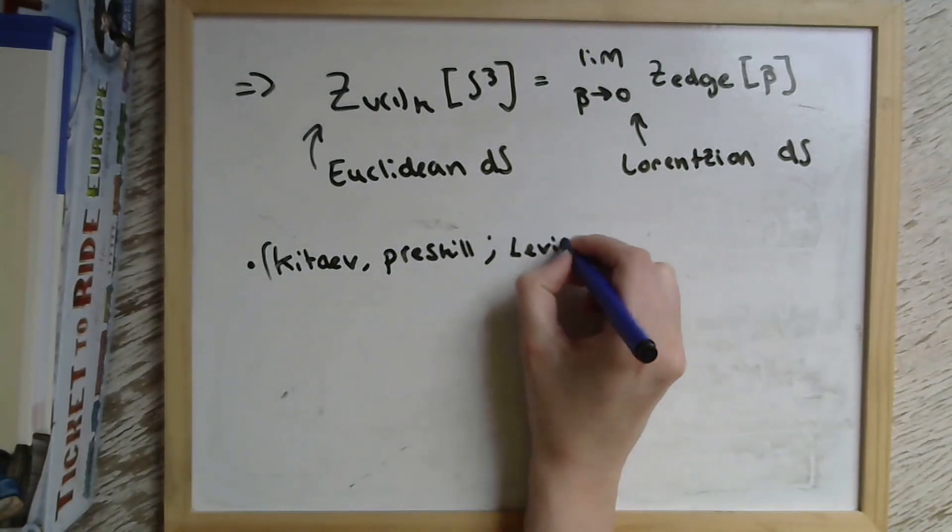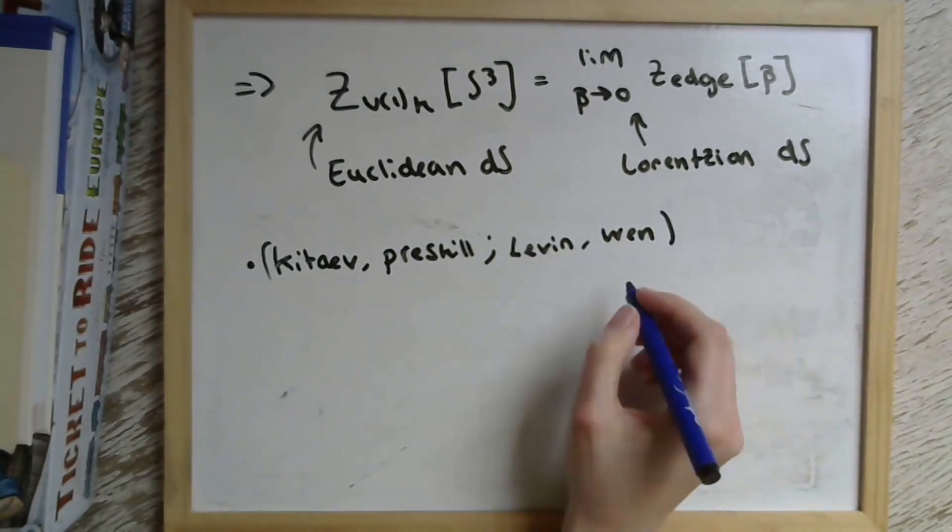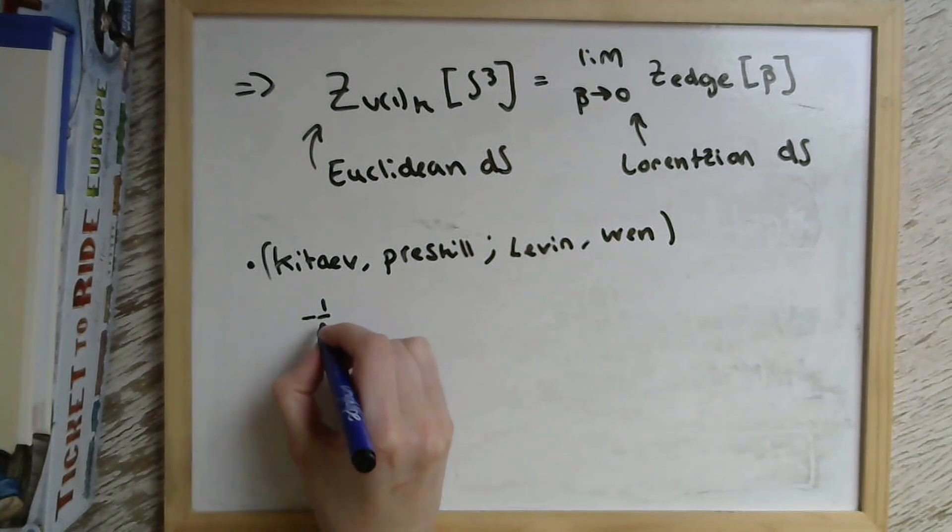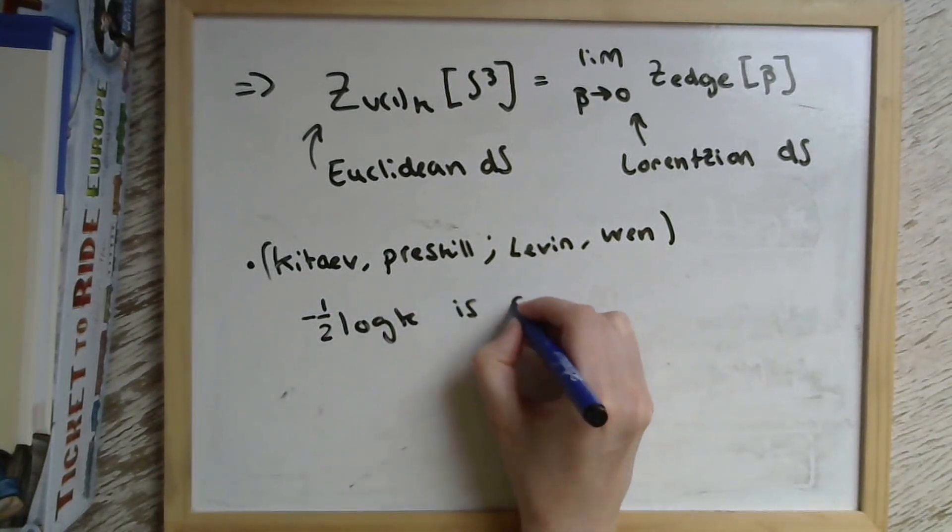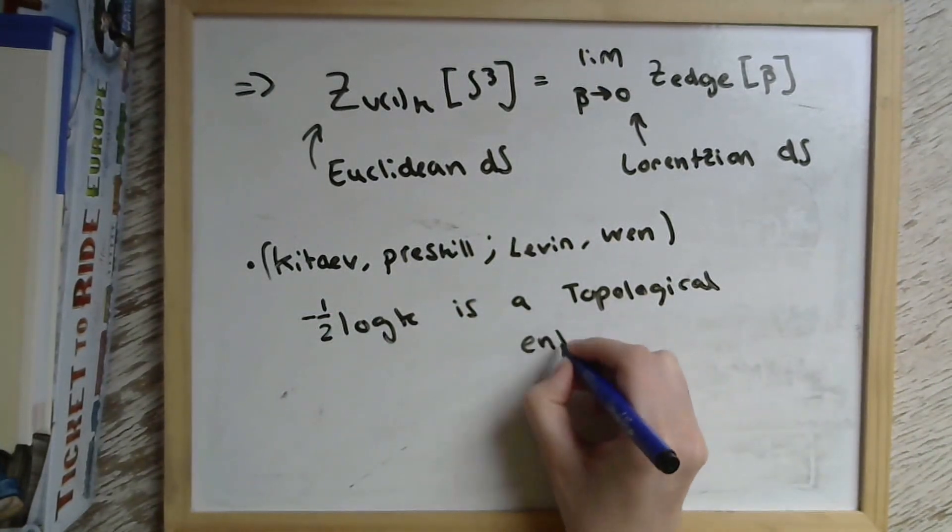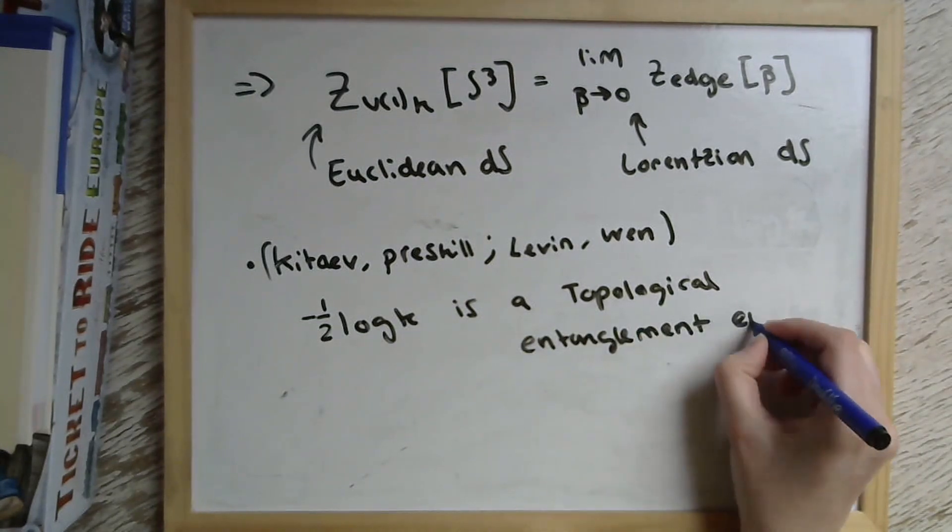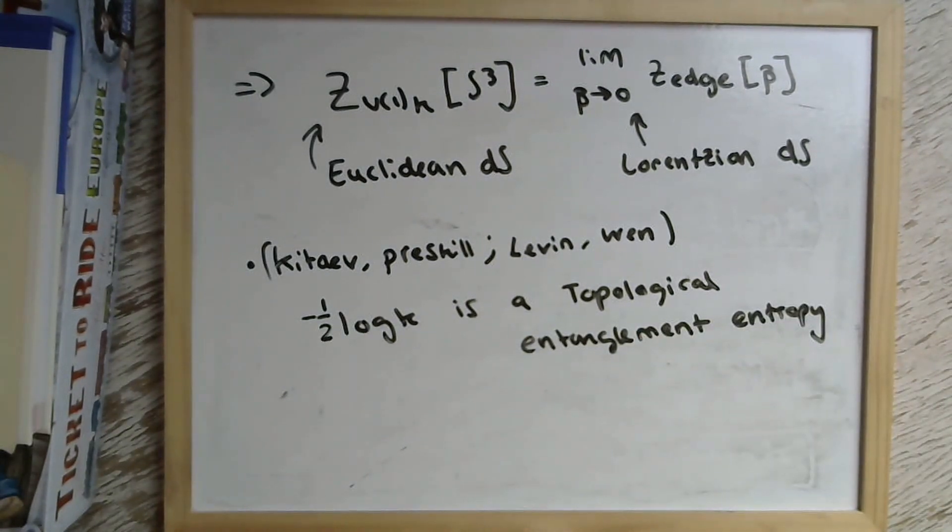Now, this -½ log K term was also found in some papers by Kitaev and Preskill and Levin and Wen, and they called it a topological entanglement entropy. And this begs the question for us, if this is an entanglement entropy, what is being entangled?